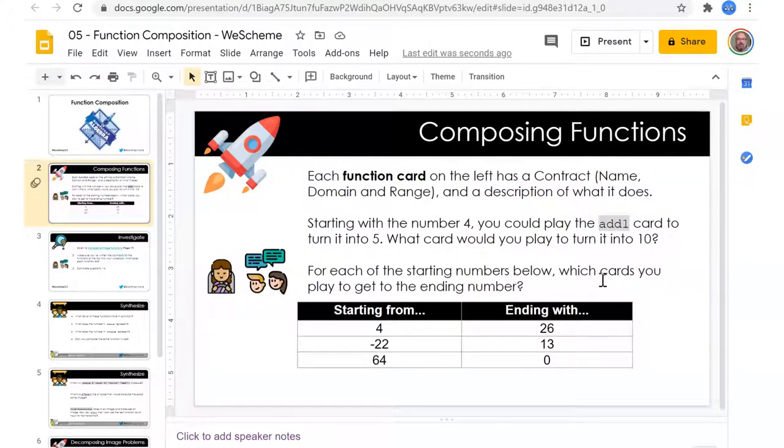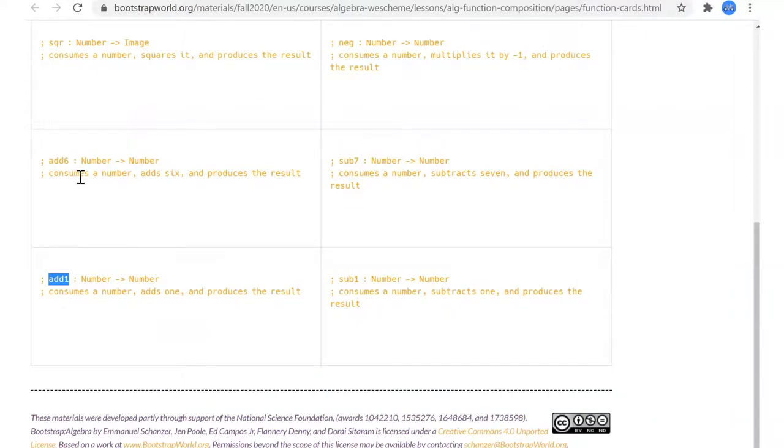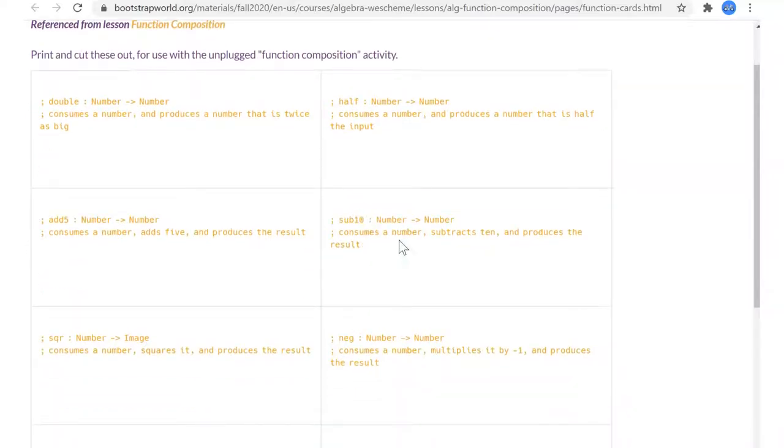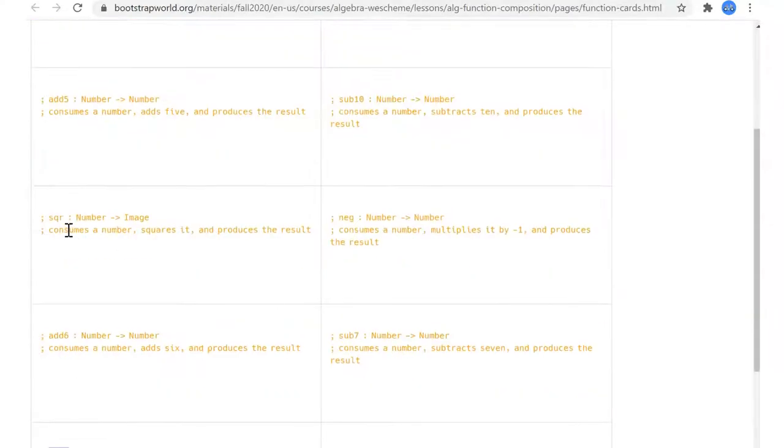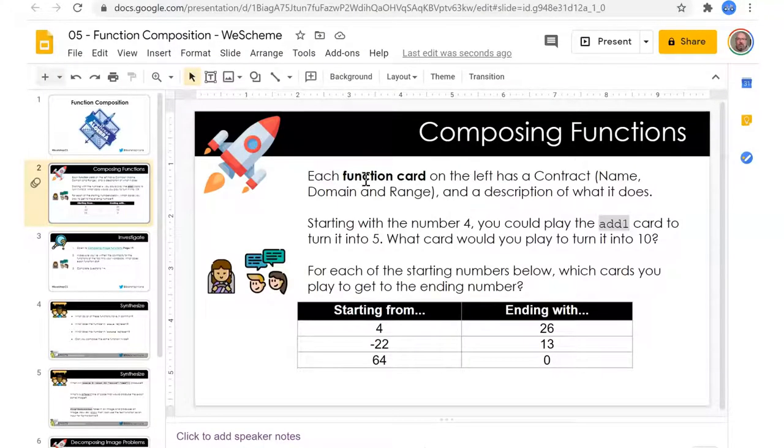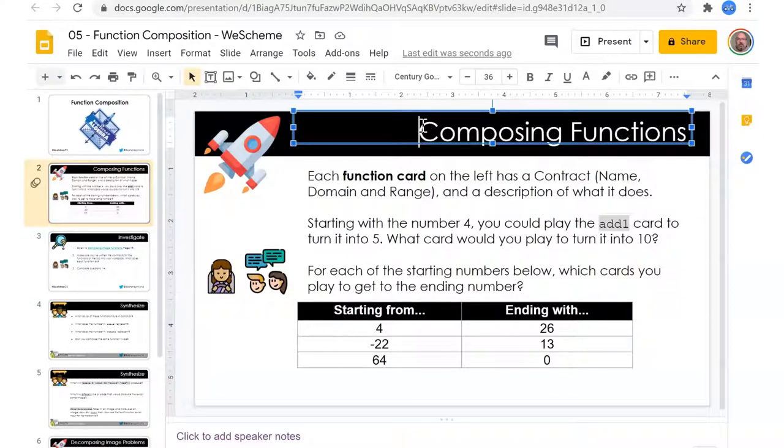Each of the starting numbers, which card we play to get the ending number. So we got double, half, add five, sub 10, consumes number subtract 10, square, negative. So we need to go over these cards as a first thing and then do these. I think maybe we'll have them do it as a warm-up.